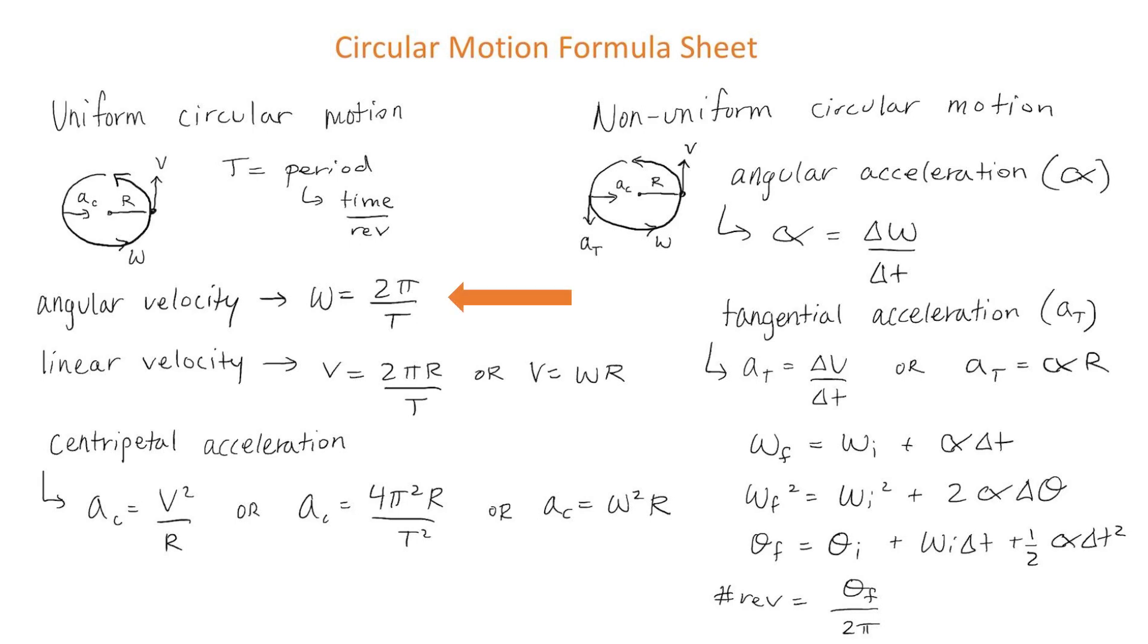The object will also have an angular velocity, which is given the variable omega. We can find the angular velocity using the equation omega equals 2 pi divided by t. Angular velocity has the units of radians per second.